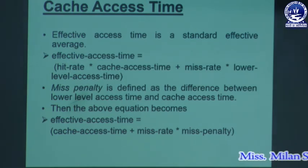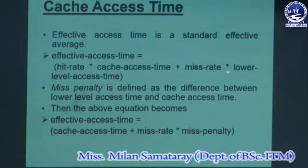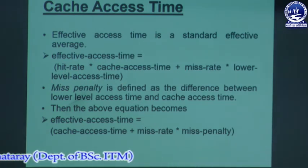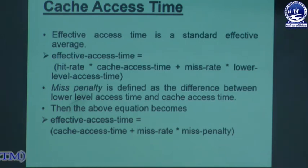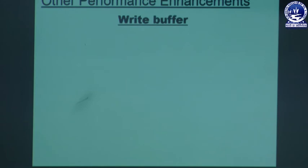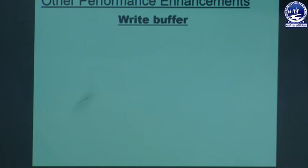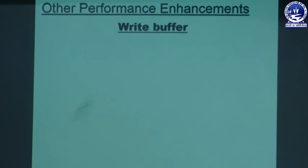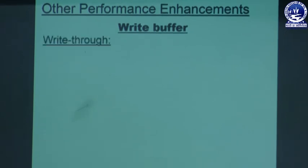To calculate effective access time you need hit rate, miss rate, cache access time, and lower-level access time. Next is the write buffer concept, which can also enhance the performance of a computer system. Two protocols are used: write-through and write-back, which I discussed in previous lectures, but here we implement them in the context of cache performance.